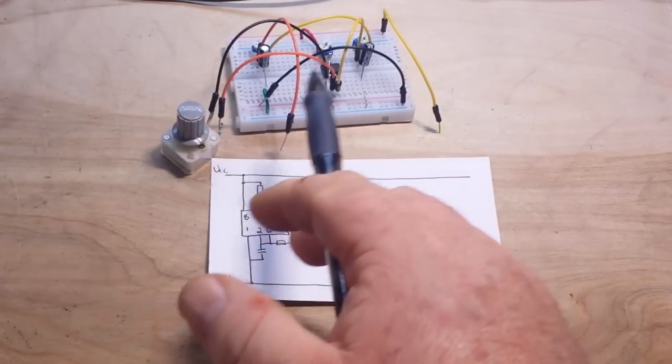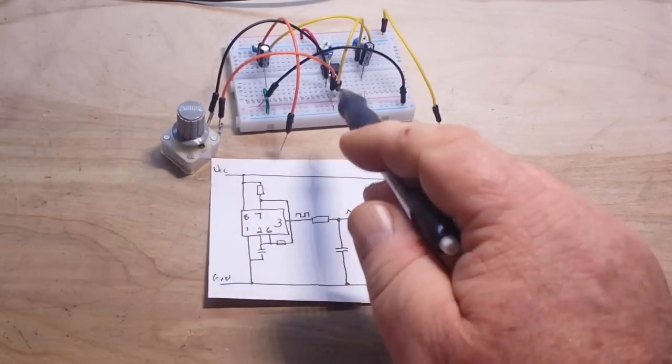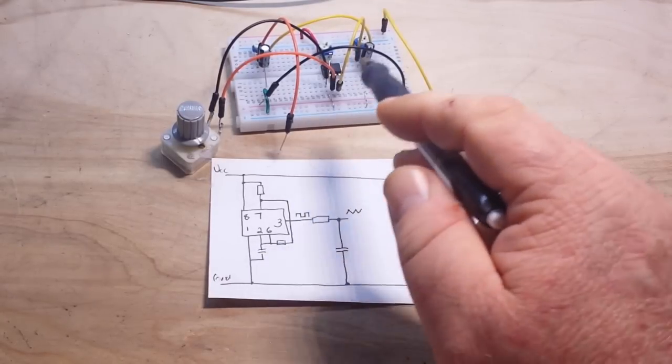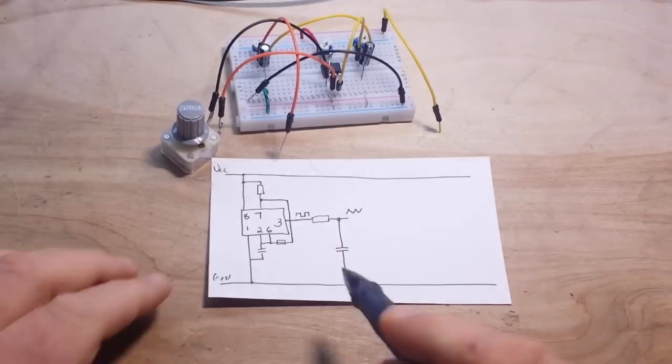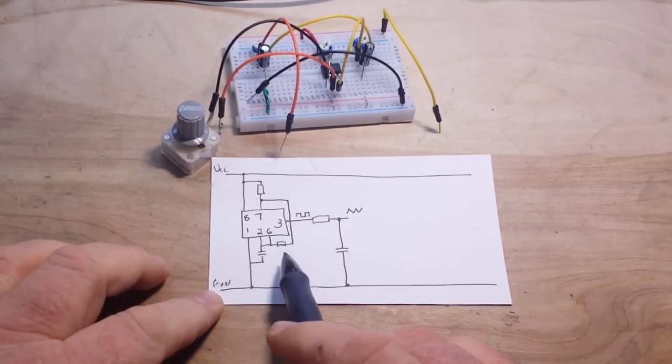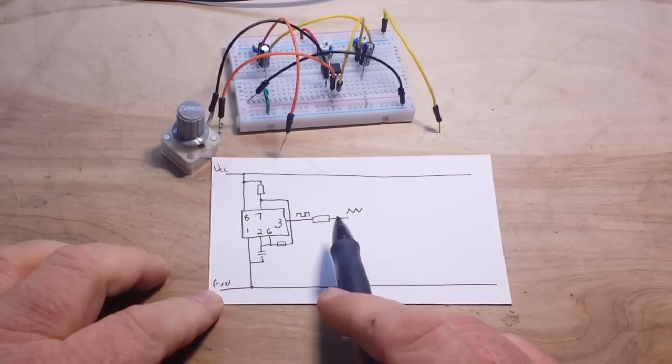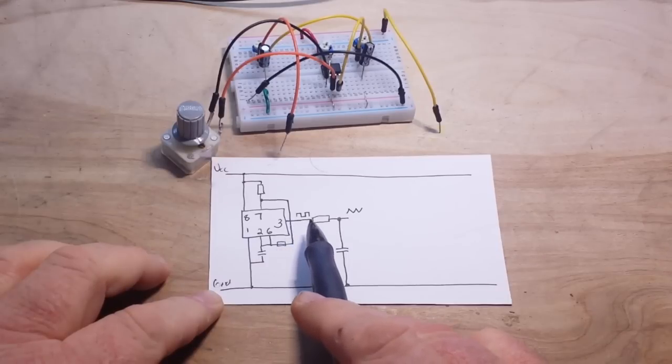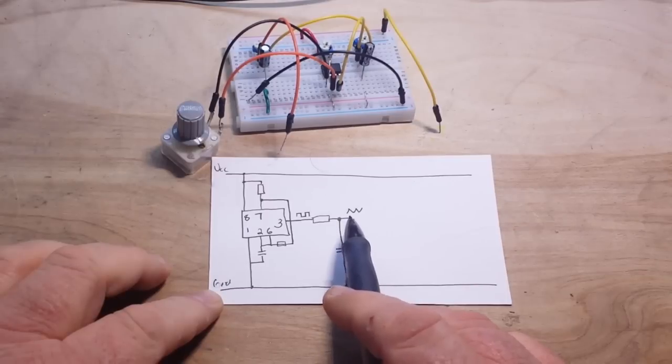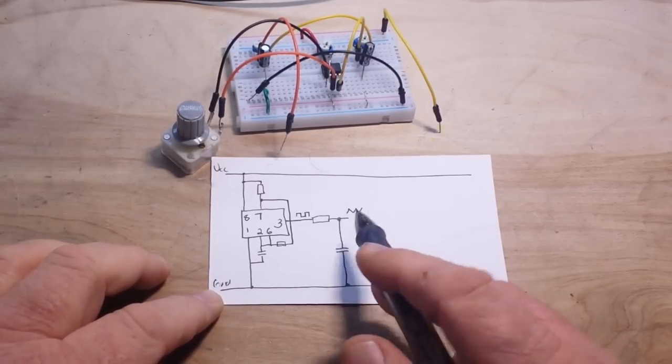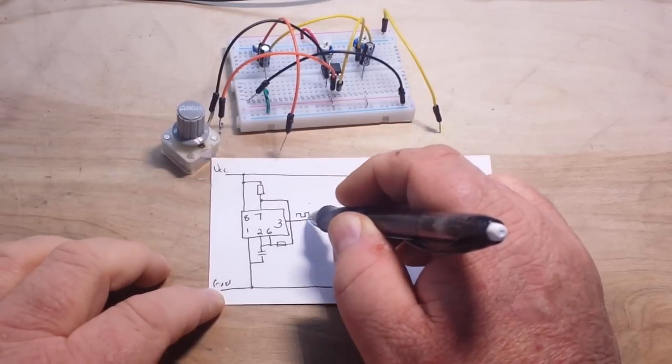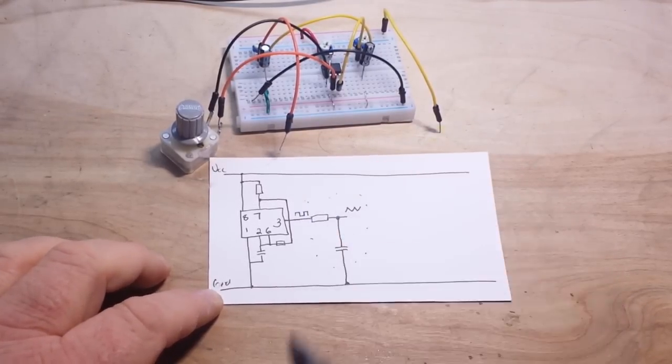Here's where we've left off. We have our 555 timer that outputs a square wave signal over to a low pass filter that converts it into a triangle wave. Here's your circuit diagram of how we're doing that. There's our output pin three, outputs a square wave, goes through a simple low pass filter and gives us a triangle wave. Remember this part of the circuit here is what's called an integrator.